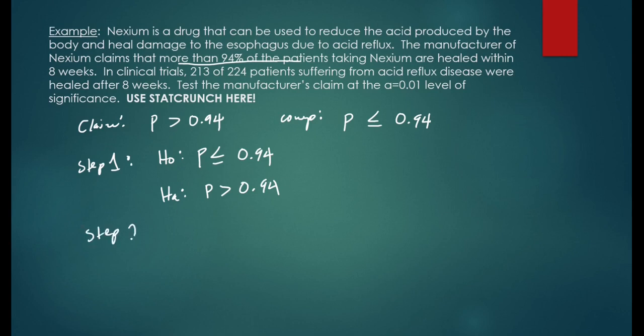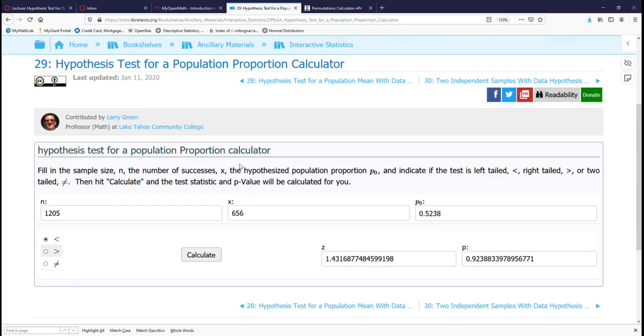Step 2, we'll state alpha. Alpha is 0.01. Let's try the problem now on the computer. Make sure we have the sample size selected and enter 224. The number of successes is 213. And for p, we have 0.94.